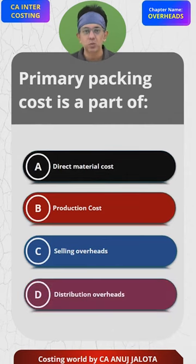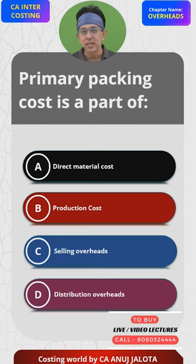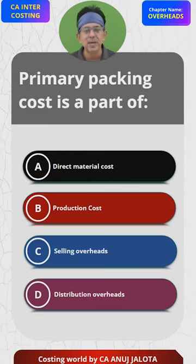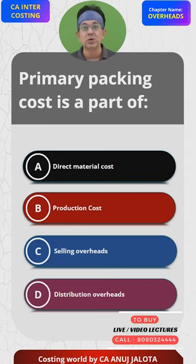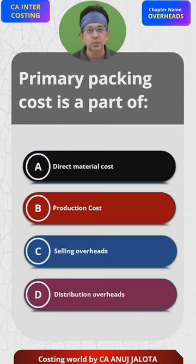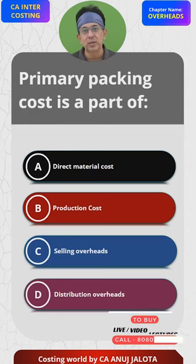Primary packing means what? Suppose you all make jam, and then to pack it you are going to be having a bottle — that bottle is primary packing. But do remember, primary packing is only done once a product is made. It is not part of direct material cost. Why? Because it is not supposed to be charged to WIP.